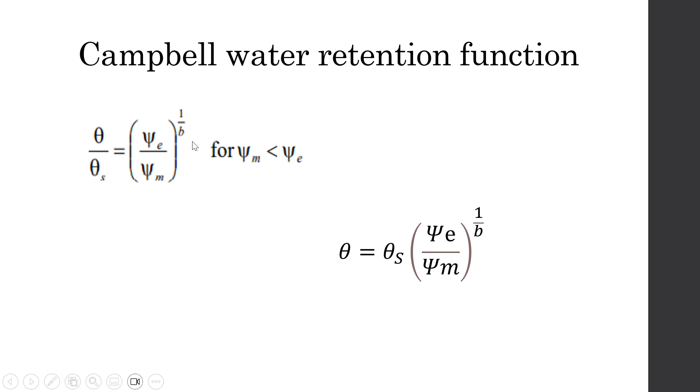B is the parameter related to pore size distribution. This is for soils with matrix potential that is less than the air entry potential. So by doing simple algebra, we will arrive with this equation for the volumetric water content. Let's try to solve some problems with this equation.